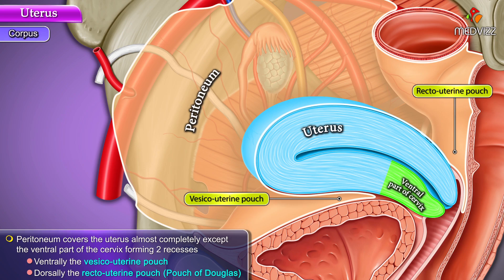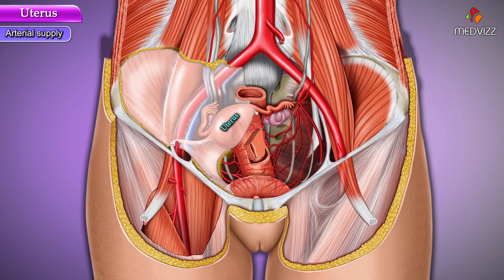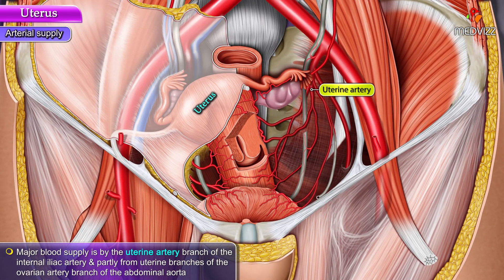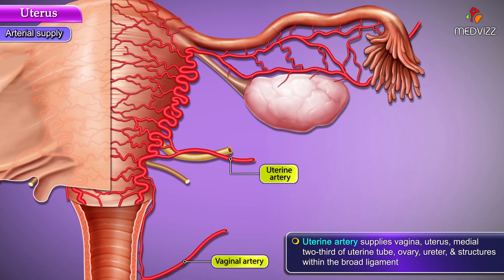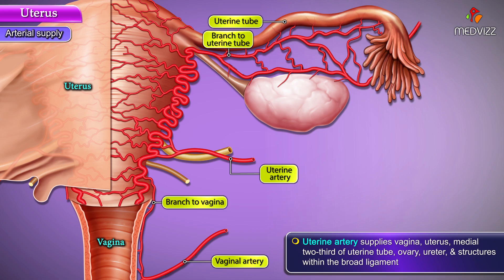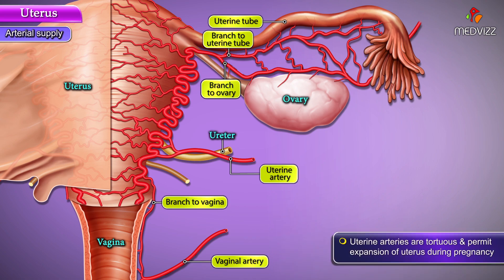The major blood supply is by the uterine artery, which is a branch of the internal iliac artery, and partly from the uterine branches of the ovarian artery, which is a branch of the abdominal aorta. The uterine artery supplies the vagina, uterus, medial two-thirds of the uterine tube, ovary, ureter, and the structures within the broad ligament. The uterine arteries are tortuous and permit expansion of the uterus during pregnancy.